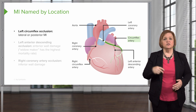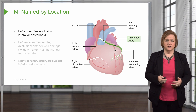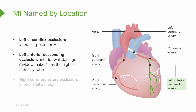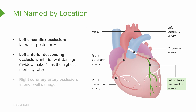A left circumflex occlusion means a blockage in the left circumflex artery. But here's the Widowmaker — the left anterior descending artery occlusion. Find that on the graphic. It has the highest mortality rate because it causes anterior wall damage and significantly impacts the left ventricle, which is responsible for pushing blood out to the rest of the body — which is why it's such a significant heart attack.